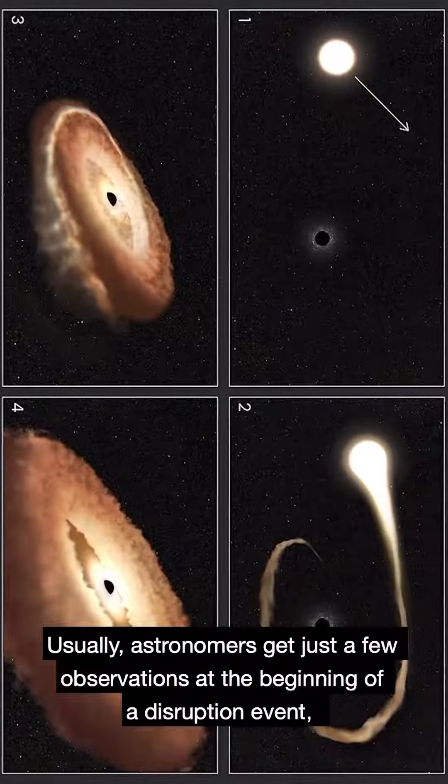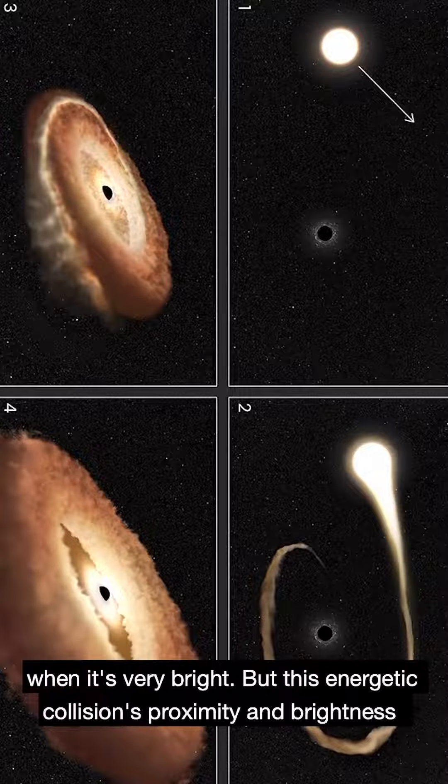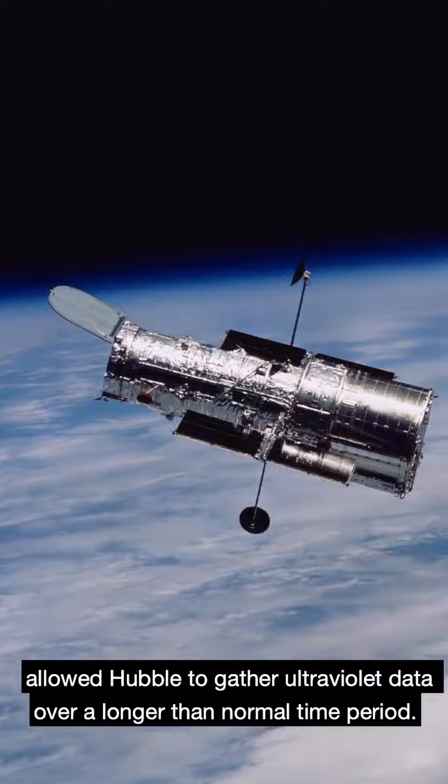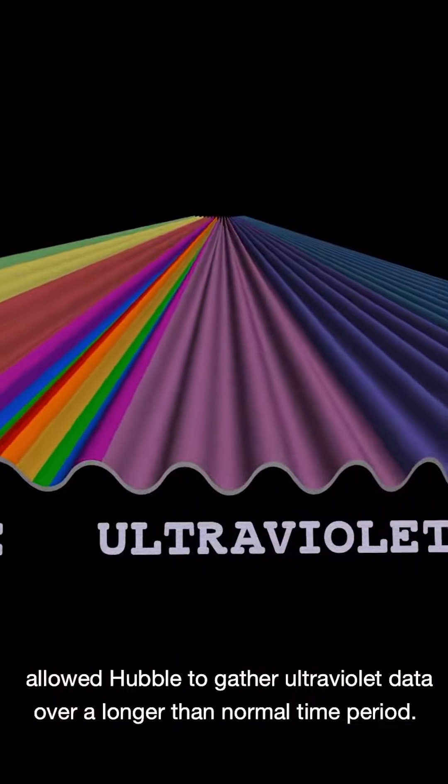Usually, astronomers get just a few observations at the beginning of a disruption event when it's very bright, but this energetic collision's proximity and brightness allowed Hubble to gather ultraviolet data over a longer-than-normal time period.